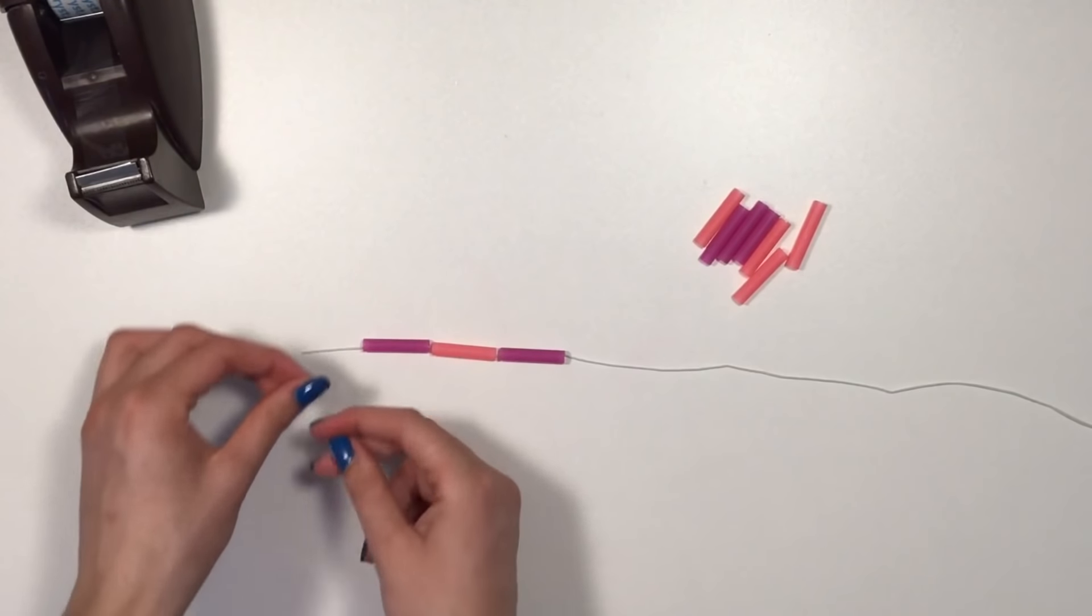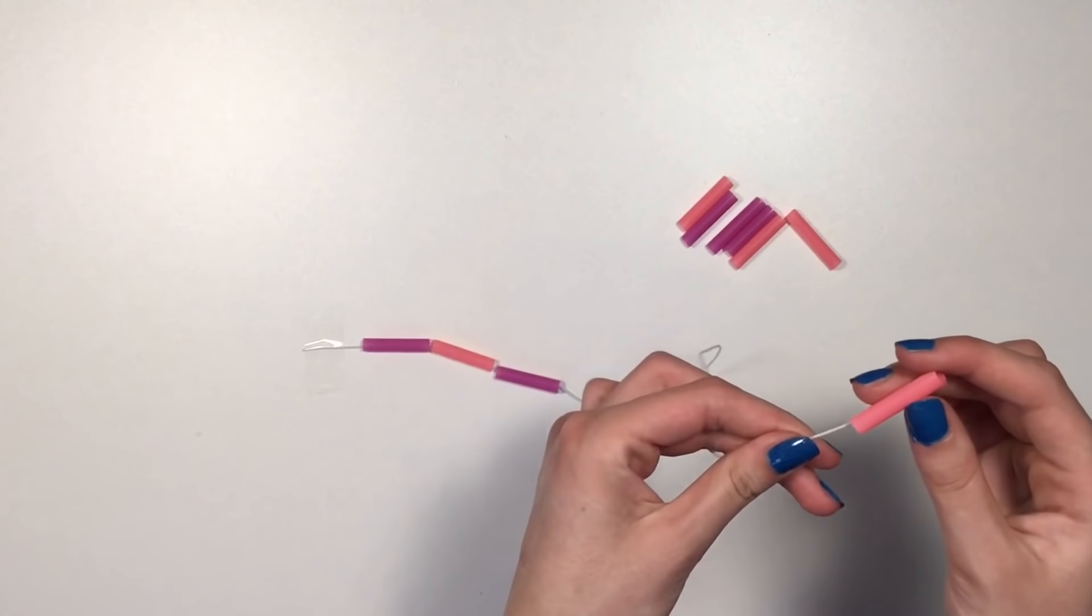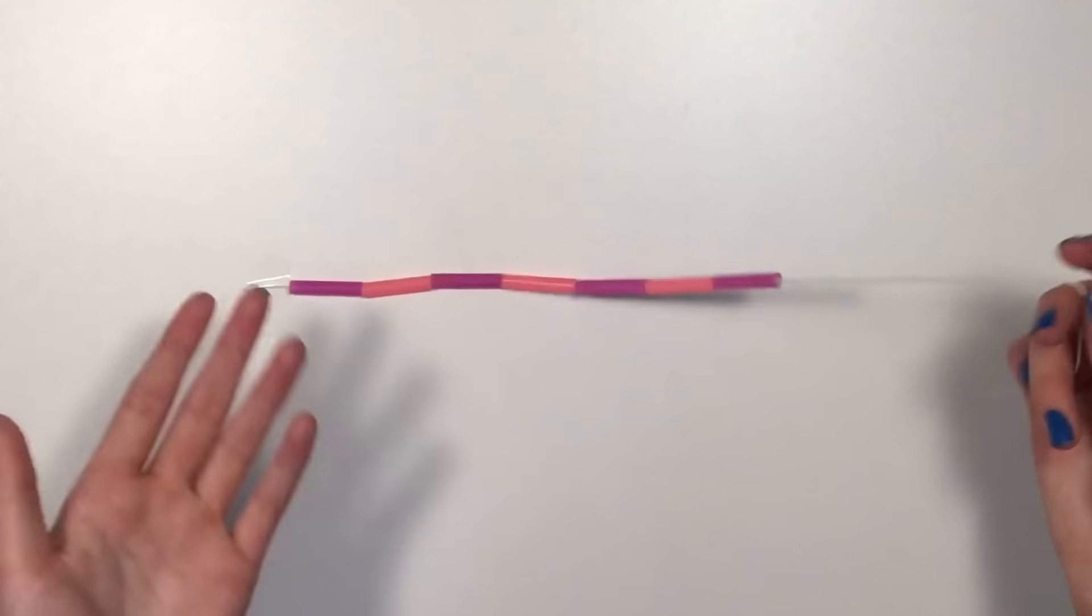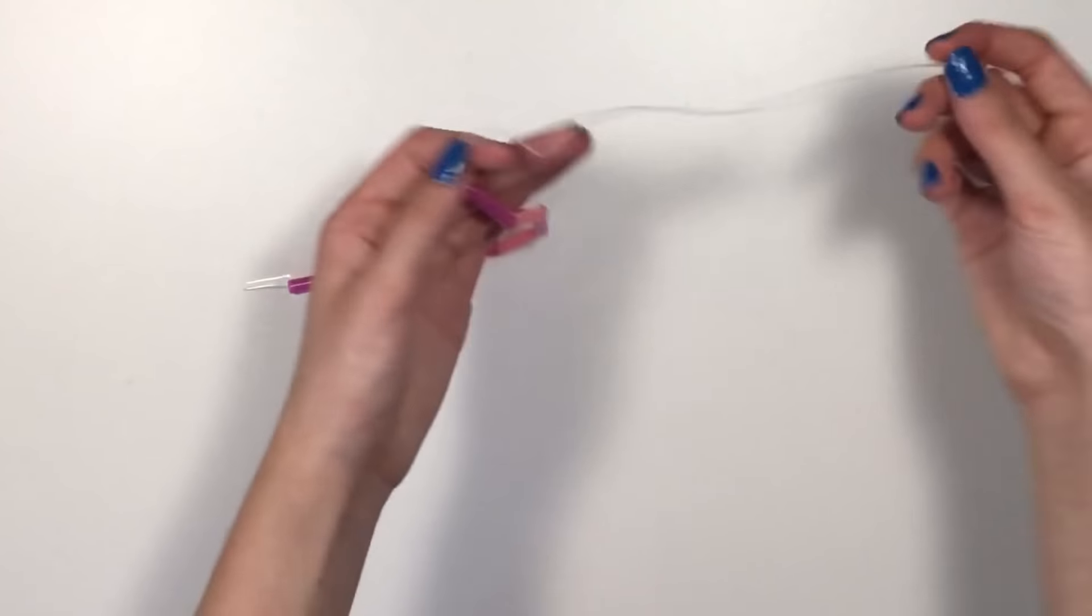Tape the string down to the table. Now you can continue putting them on and not worry about them falling off.